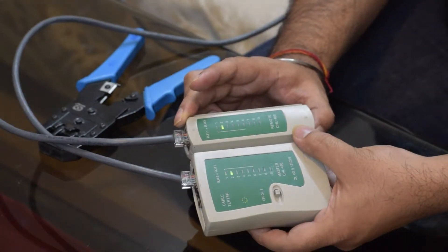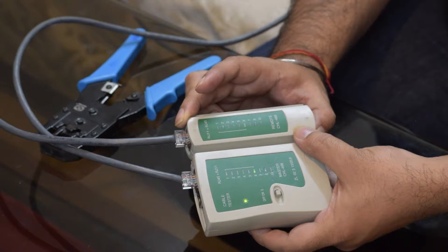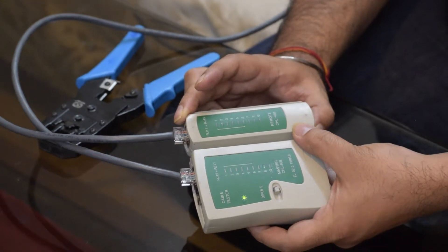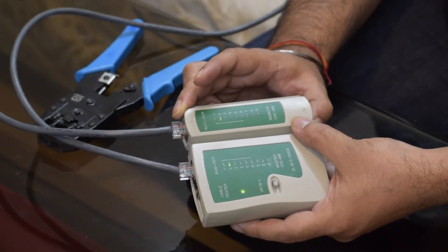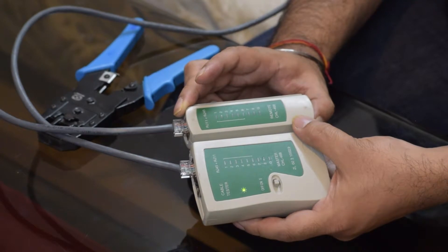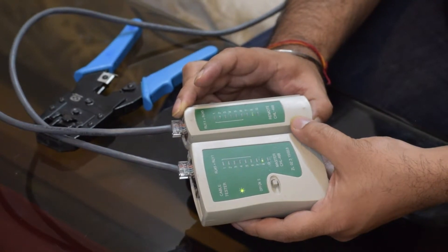So here we can see 1, 2, 3, 4, 5 is missing, 6, 7, 8.